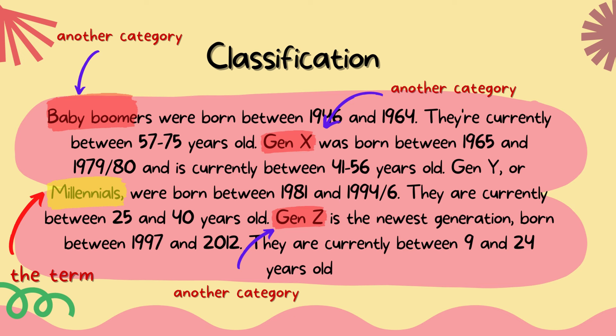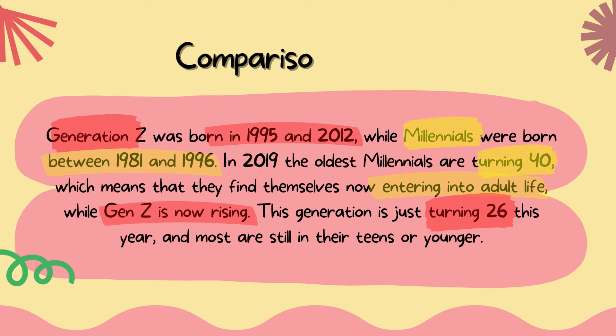We can also use comparison and contrast to show how the topic is similar or different from others in the class. Here is our example: Generation Z was born between 1995 and 2012, while Millennials were born between 1981 and 1996. In 2019, the oldest Millennials are turning 40, which means they find themselves now entering into adult life, while Gen Z is now rising. This generation is just turning 26 this year, and most are still in their teens or younger.